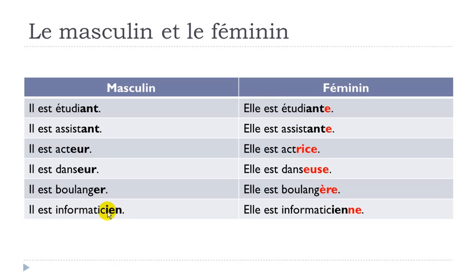The last group is -IEN, pronounced 'yin'. For example, informaticien. To form the feminine, you double the N and add a final E, giving informaticienne — the double consonant opens the E to an 'A' sound. Il est informaticien, elle est informaticienne.